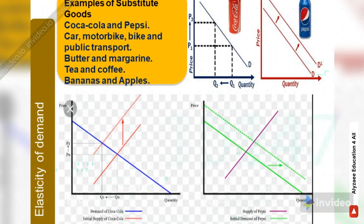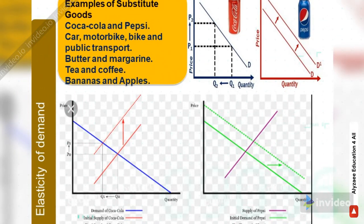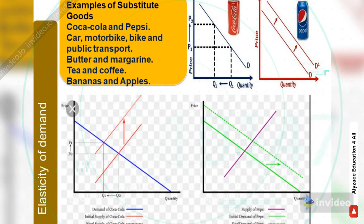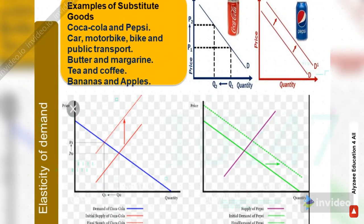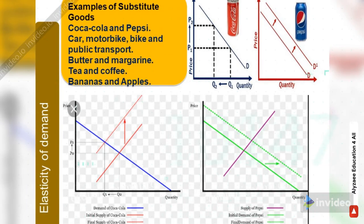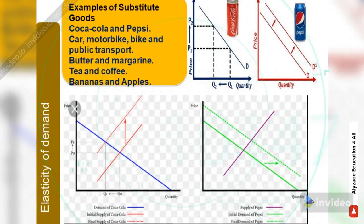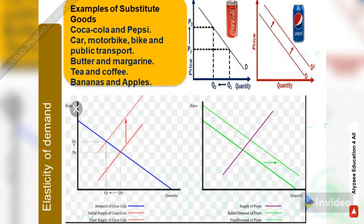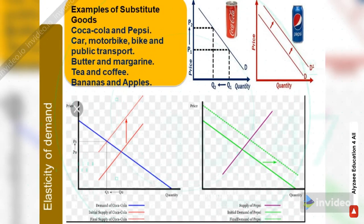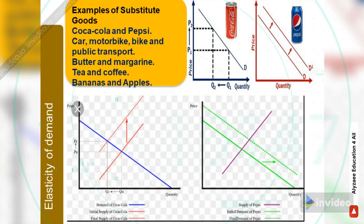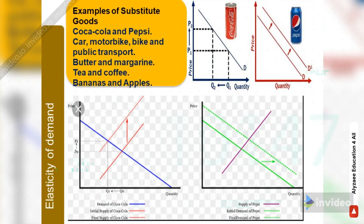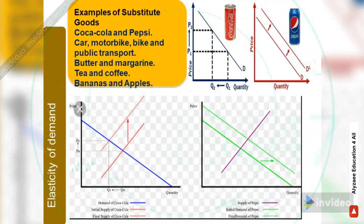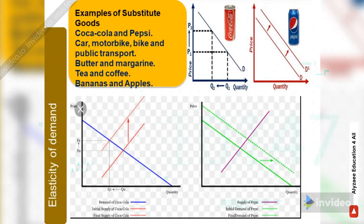For example, when Coca-Cola's price goes up, quantity demanded falls and people substitute towards Pepsi — the demand line shifts from D to D1. In the graphical representation, the demand of Coca-Cola is the blue line, the initial supply of Coke is the solid red line, and when price shifts from P0 to P1, the final supply of Coca-Cola is the dotted red line. For Pepsi, the initial demand is the solid green line, and with substitution from Coke to Pepsi the demand line moves from solid green to dotted green.